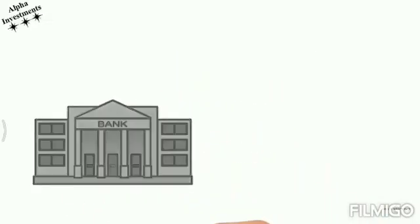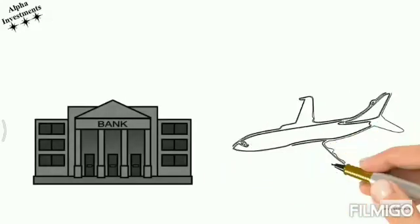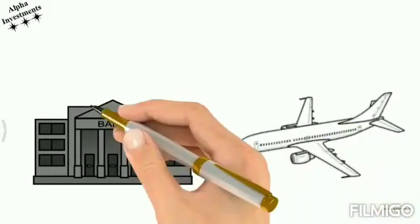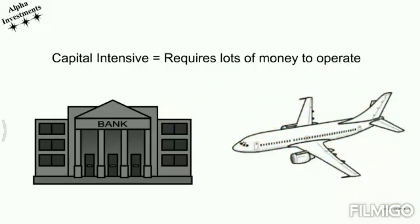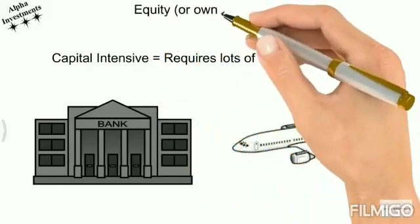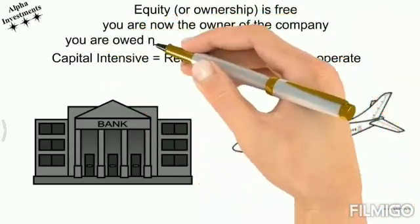For example, banks and airline companies are notoriously known for always being public because these are referred to as capital intensive businesses, meaning they require a lot of capital. Where do they get that capital? Well, it's best to go into the public. Why is it best to do this? Because it's free.